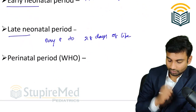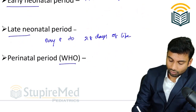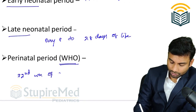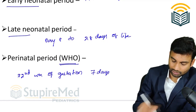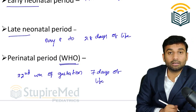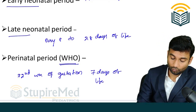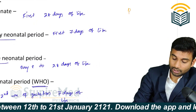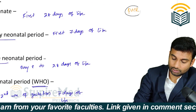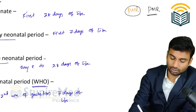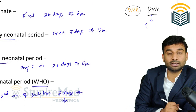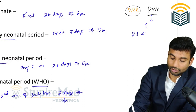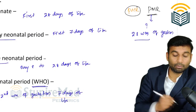The next thing is the perinatal period. According to the World Health Organization, the perinatal period is defined as from the 22nd week of gestation to 7 days of life. However, an important MCQ point: the perinatal mortality rate, or PMR, is not calculated from the 22nd week of gestation — it is calculated from 28 weeks of gestation. The examiner may ask this, so do not make this mistake.